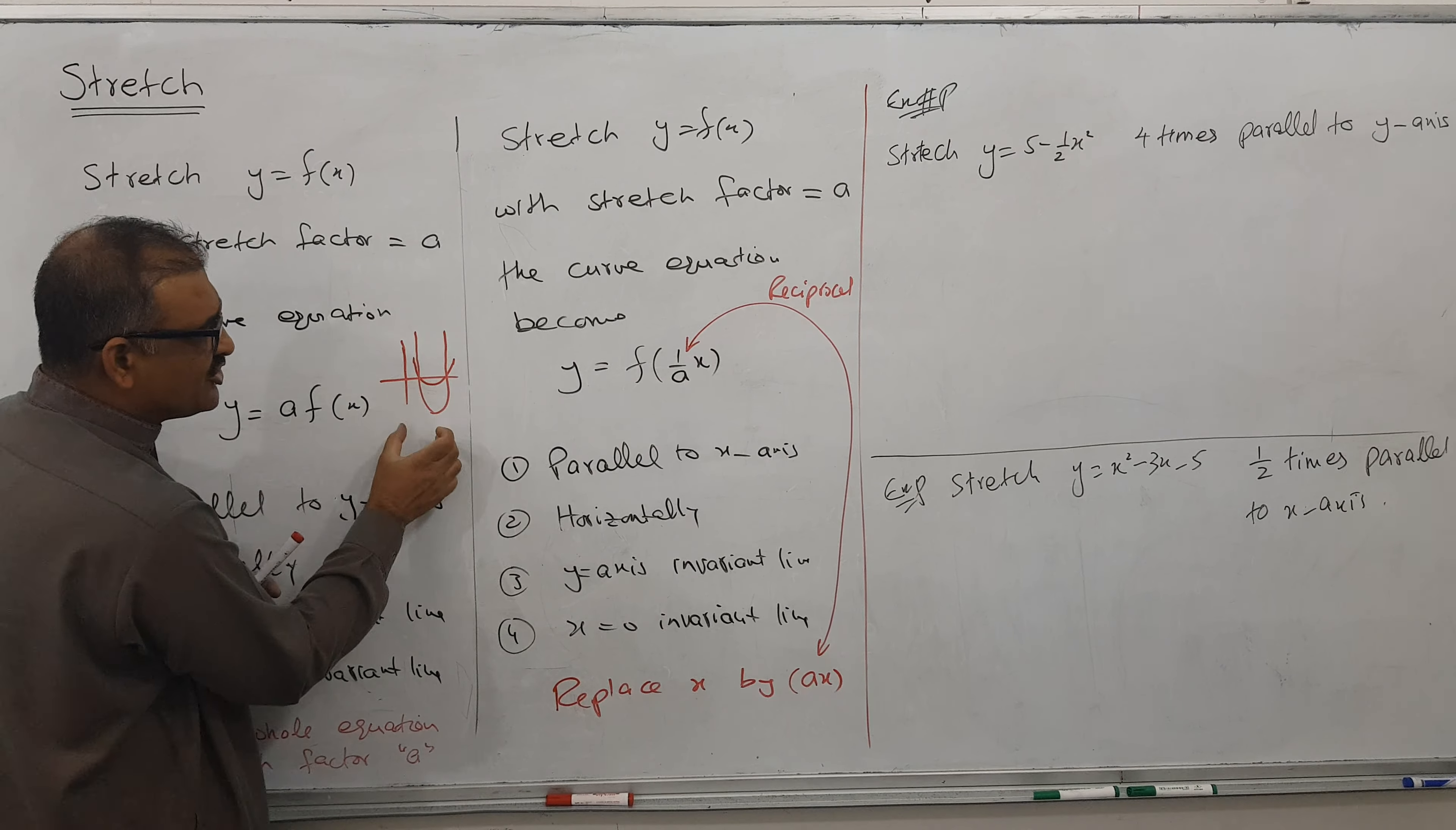So when we replace x by 2x, the answer becomes: here 2x, here 2x. So 2² gives you 4x² - 6 - 5. This is the answer.